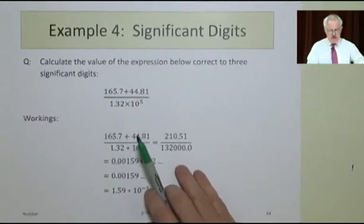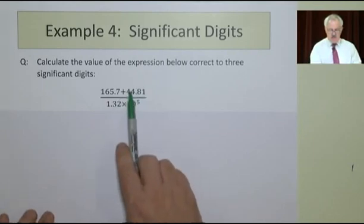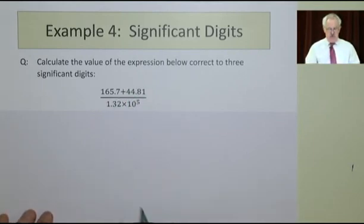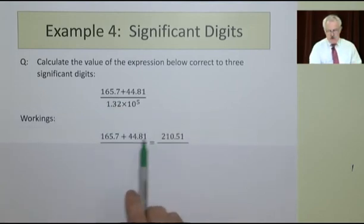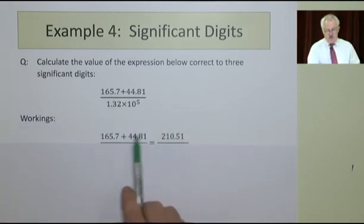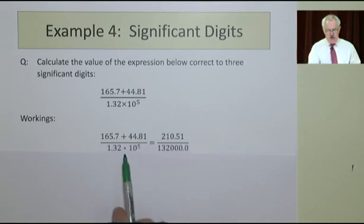It might say calculate the value of the expression below: 165.7 plus that divided by this. So we add the two numbers on the top and we get 210.51. They're of the same sort of order. We have two decimal places here, so we have two decimal places here. And 132 × 10^5.